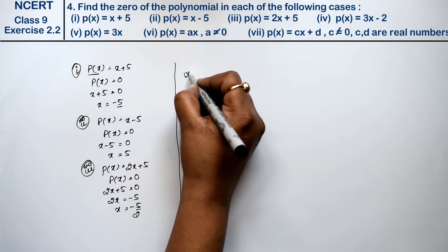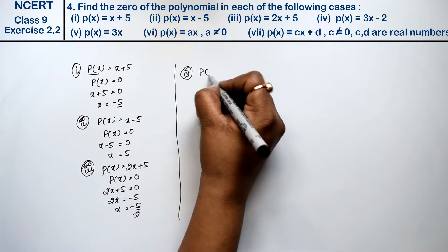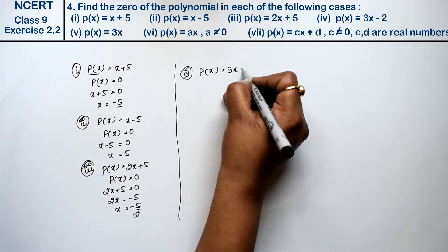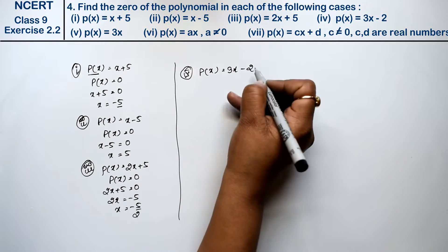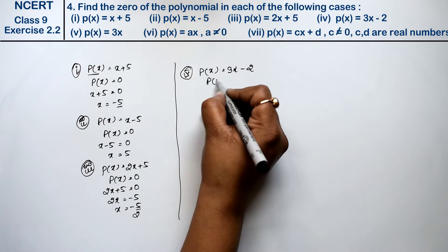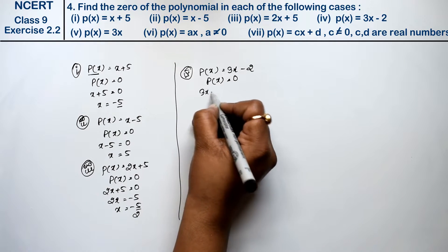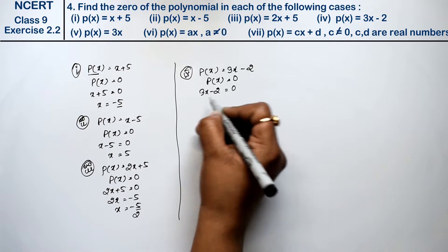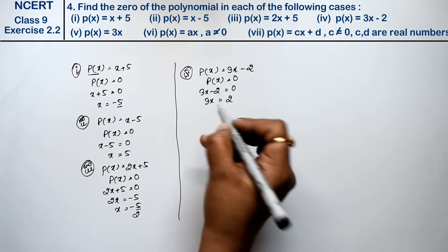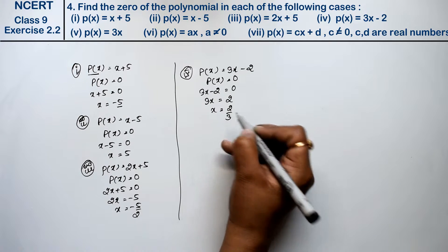Let's do fourth part. p(x) equals to 3x minus 2. तो अब देखिए p(x) की value equals to 0 रखेंगे, तो 3x minus 2 equals to 0. तो minus 2 उधर चला गया, positive हो गया. तो x की value कितनी आगई? 2 upon 3.